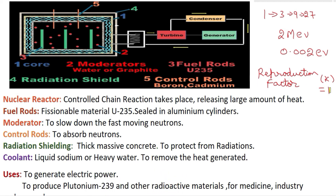Based on the reproduction factor, the height of the control rods is adjusted to make sure the value of k is always equal to one. To know more about the reproduction factor, click the link in the description. These control rods can be moved up and down based on the value of k. If the control rods are completely inserted into the core, the value of k becomes far less than one and the fission reaction stops.